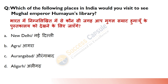Mughal Emperor Humayun's library is located in which place in India? Answer is A — New Delhi. The first fort in Delhi has this library, and Humayun fell from the stairs there in 1556.